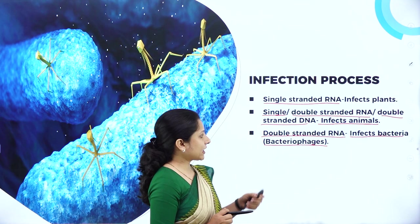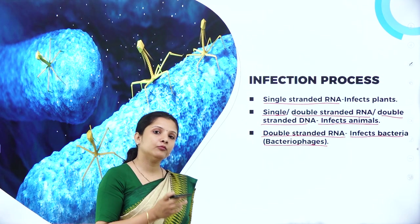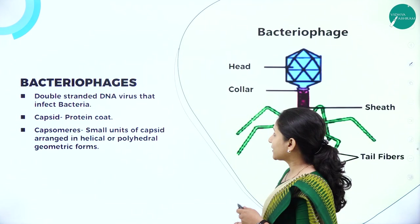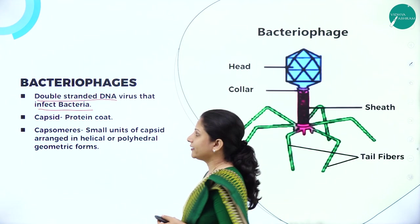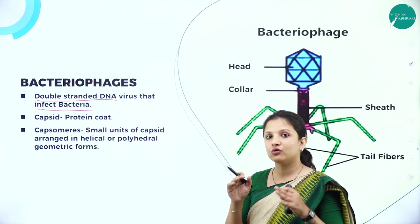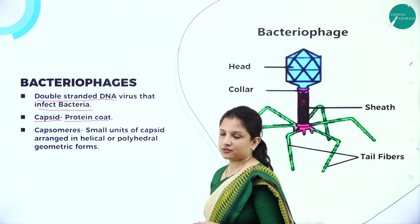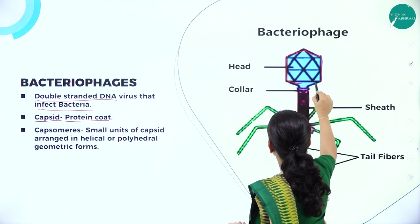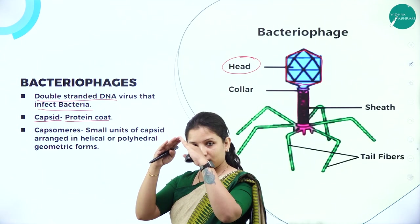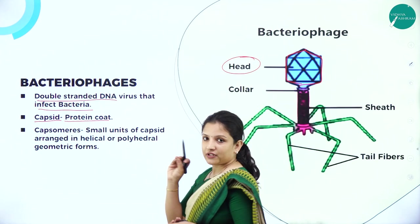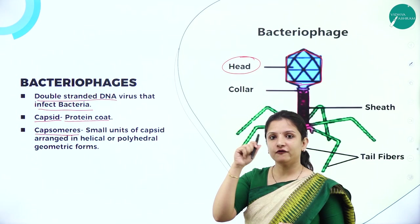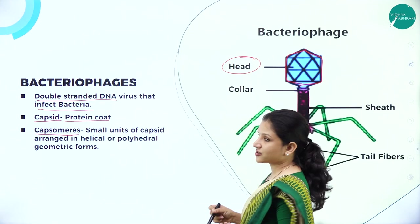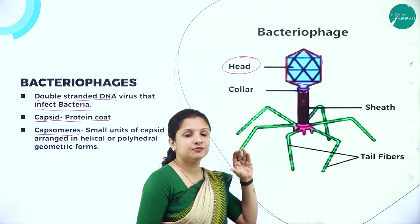What does a bacteriophage have? Bacteriophages have double-stranded DNA and they are capable of infecting bacteria. These bacteriophages are covered by a protein coat called the capsid, which is made up of protein. The head of the virus — the capsid — is made up of protein. When you look even more closely at the capsid, you can find smaller units called capsomeres, arranged in the form of a helical structure, forming a polyhedral geometric structure. Can you see the head of the virus? It is almost a geometrical structure in polyhedral shape.